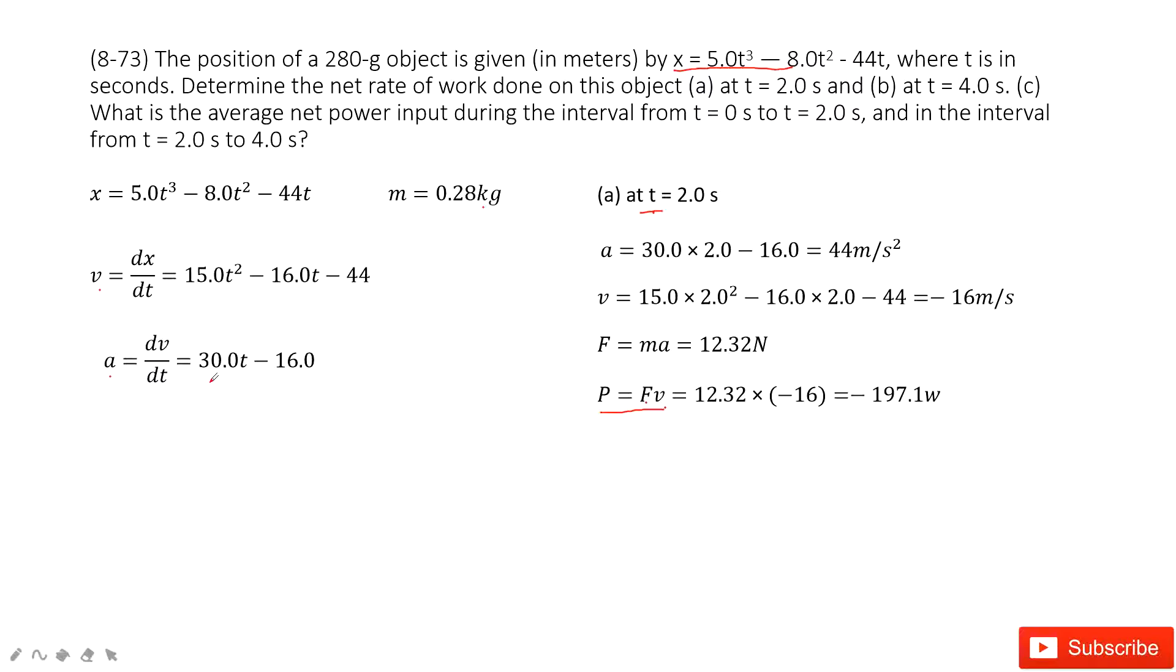And in this part, you can see, you can get the acceleration at this t equal to 2 very easily. And also get the velocity at t equal to 2 seconds very easily. So we can get the acceleration and the velocity at this certain time. Now the force can be written as mass times acceleration. So in this function, the force you get and the velocity you can get. So very easily, you can get the power.